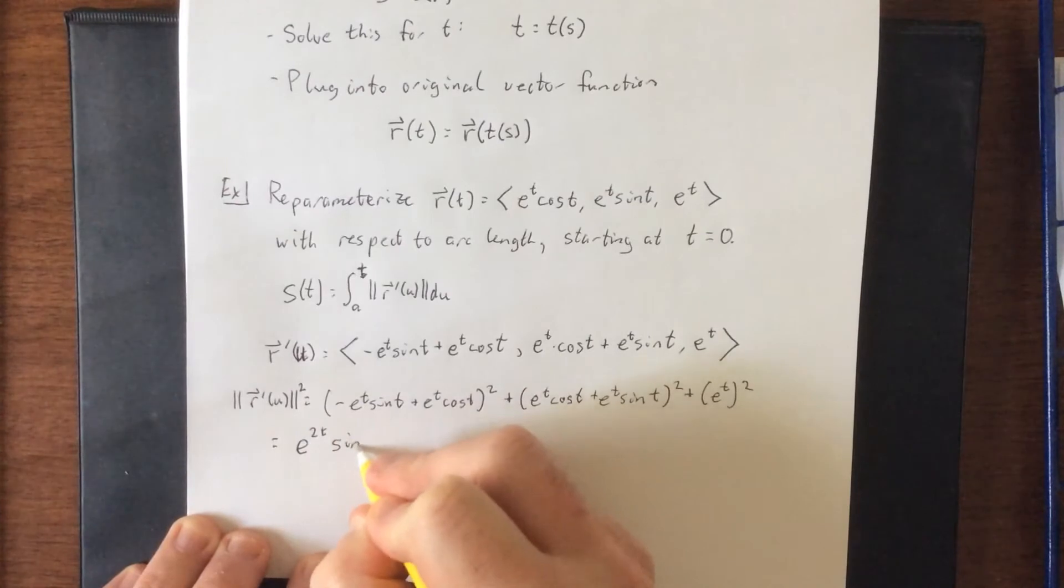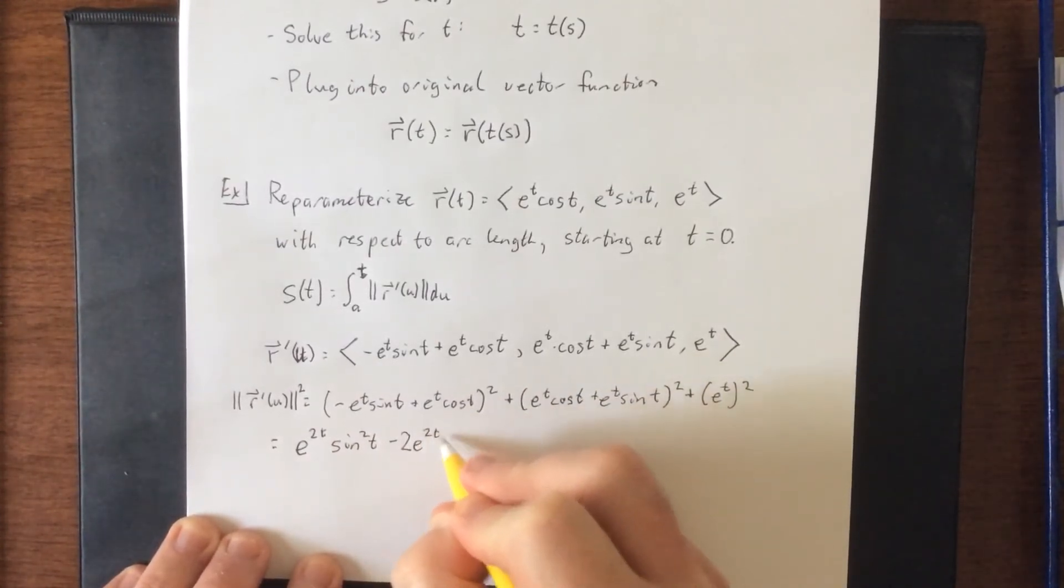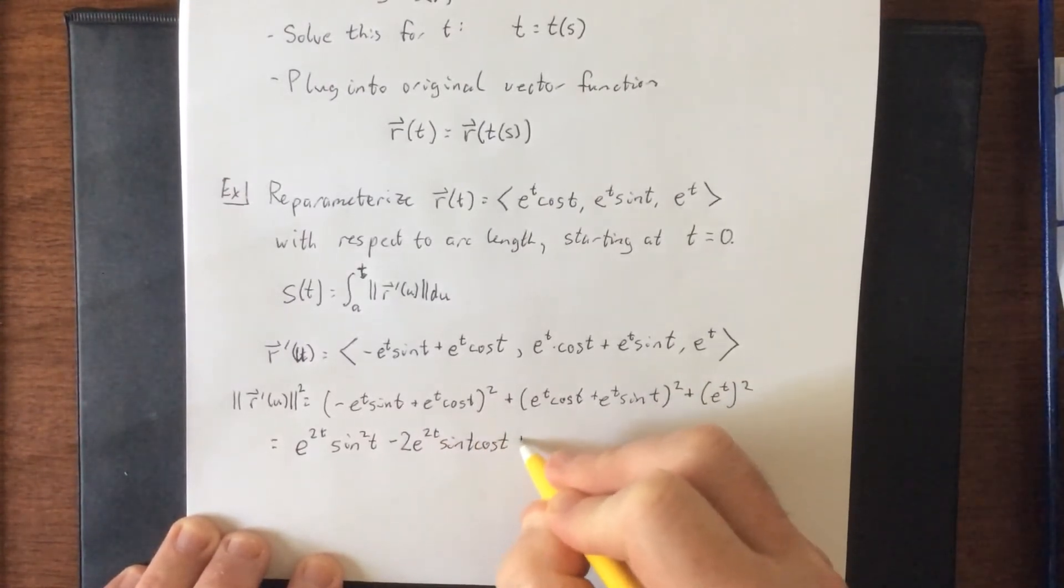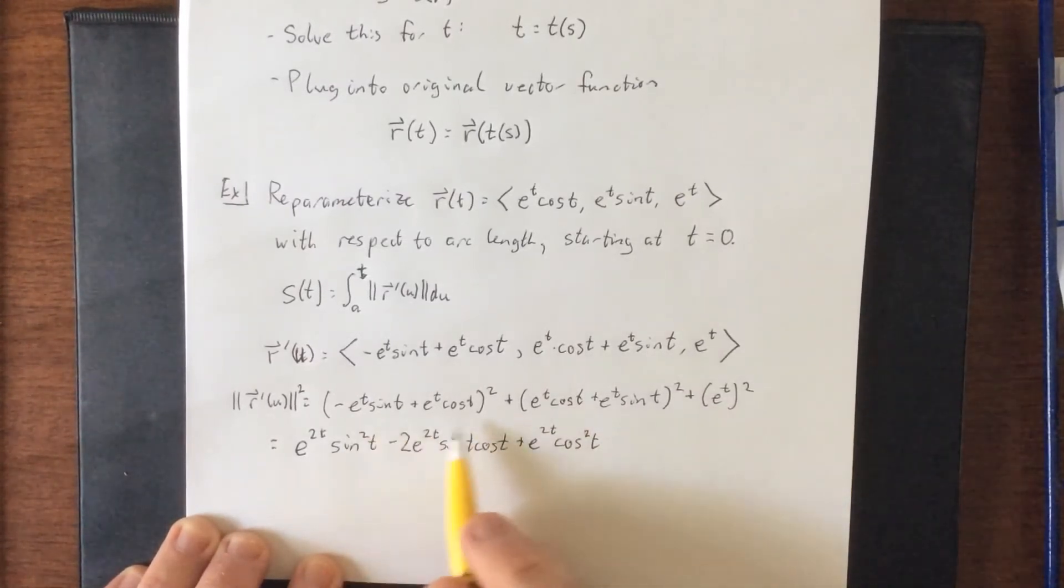So we'll see e to the two t sine squared of t minus two e to the two t sine t cosine t plus e to the two t cosine squared of t. That's all of that first one. Crap, every single one of these t's is supposed to be a u. Guys, I'm just gonna switch it back to u at the end.